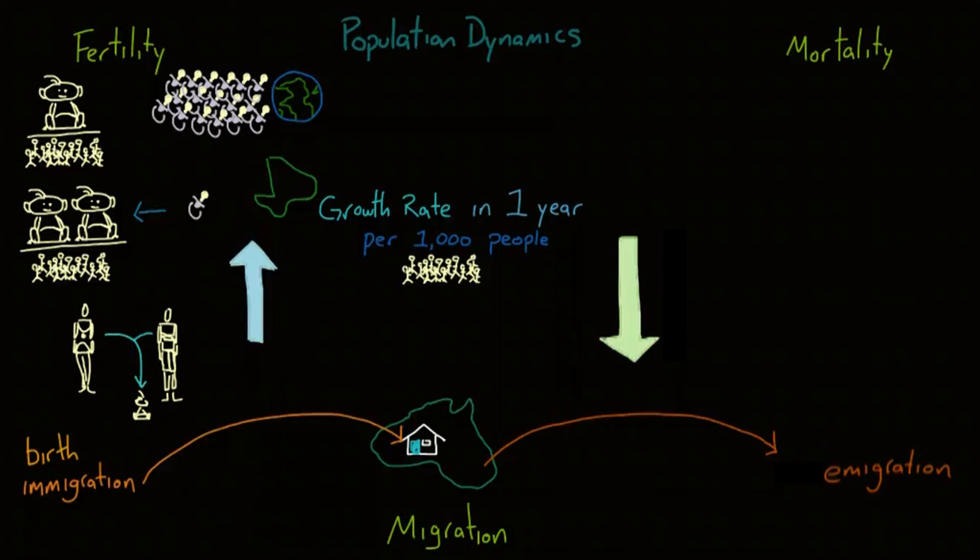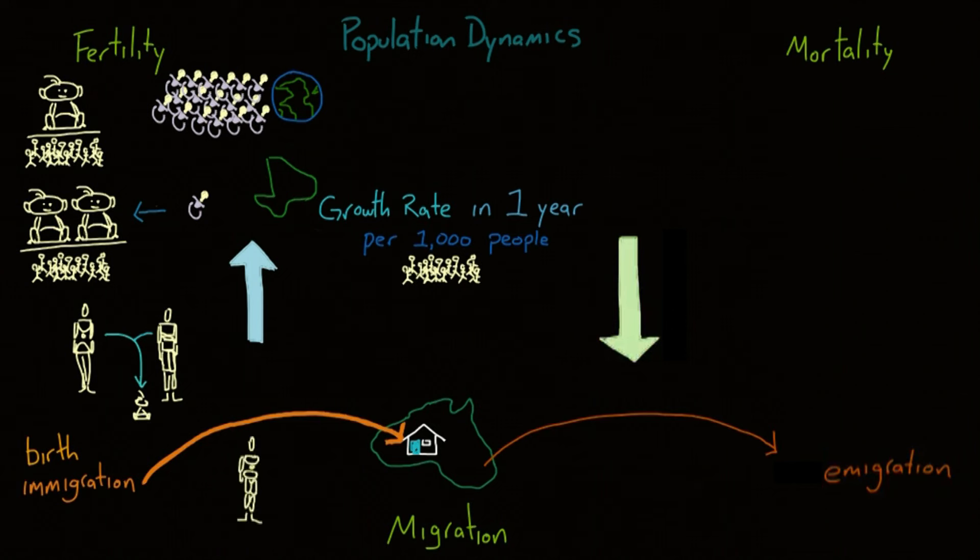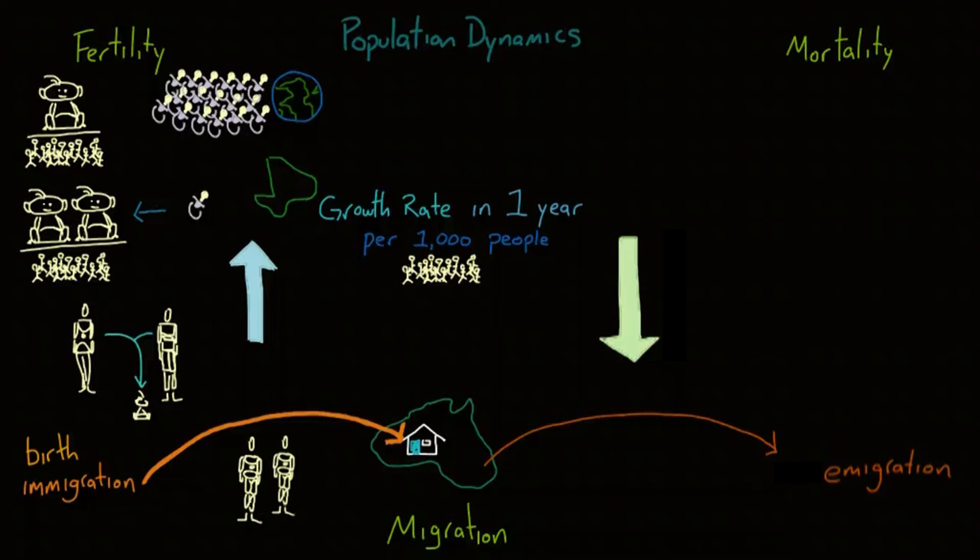Immigration, as I mentioned before, is the movement of people into a country. This number is also scaled and, again, is measured by the number of people immigrating per 1,000 people in the country. If you want to look at the total population increase, take the number of births plus the number of immigrations per 1,000 people, and there you go. That is the rate at which people were added to the population.